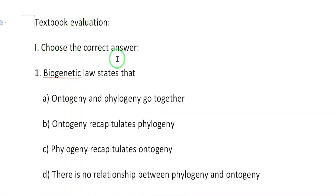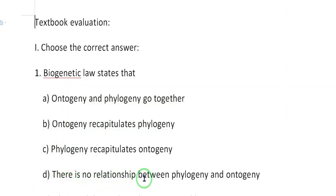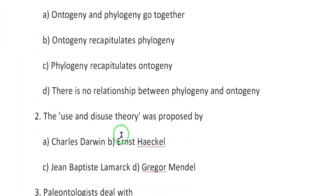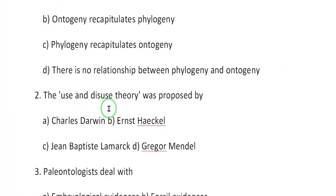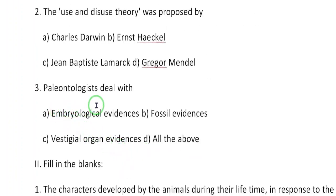Textbook evaluation — choose the correct answer. Question 1: Biogenetic law states that — correct answer is B: ontogeny recapitulates phylogeny. Question 2: The use and disuse theory was proposed by — correct answer is C: Jean Baptist Lamarck. Question 3: Paleontologist deals with — correct answer is B: fossil evidences. Fill in the blanks: 1) The characters developed by animals during their lifetime in response to changes are called acquired characters. 2) The degenerated and non-functional organs found in an organism are called vestigial organs. 3) The forelimb of bat and human are examples of homologous organs. 4) The theory of natural selection was proposed by Charles Darwin.